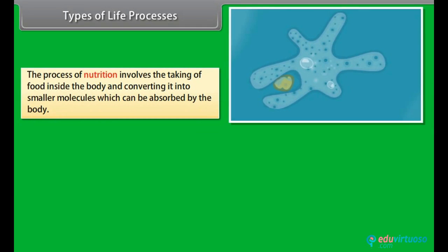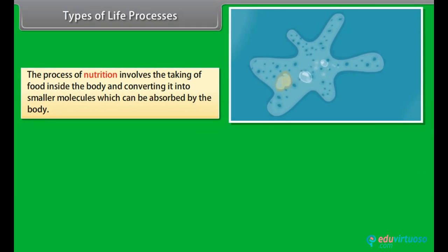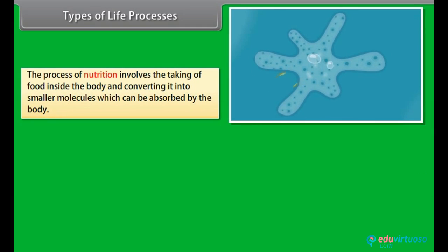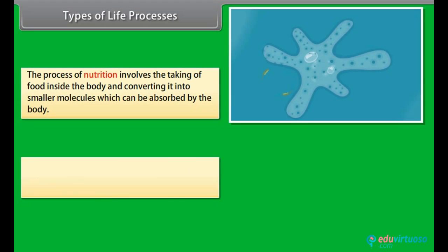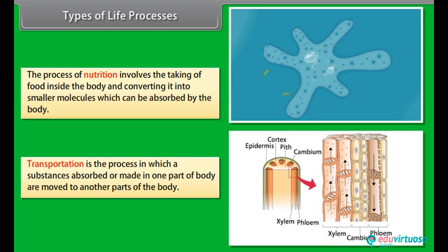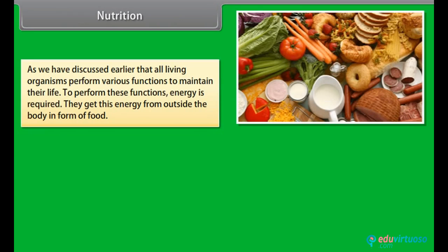Organisms produce new organisms similar to themselves by the process of reproduction. Excretion is the process in which waste materials are removed from the body. The process of nutrition involves taking food inside the body and converting it into smaller molecules which can be absorbed by the body. Transportation is the process in which substances absorbed or made in one part of the body are moved to other parts.